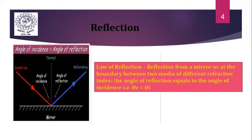critical angle, total internal reflection, numerical aperture, acceptance angle, and types of rays. Let us start with the law of reflection. It states that the angle of incidence theta 1 is equal to angle of reflection theta 2. For example, when a wave approaches a reflecting surface such as a mirror, the wave that strikes the surface is called incident wave.